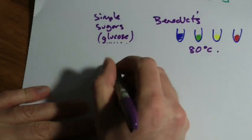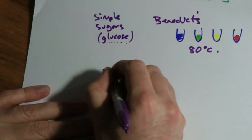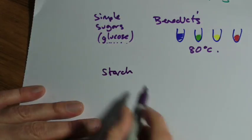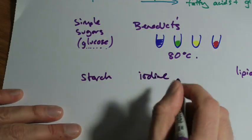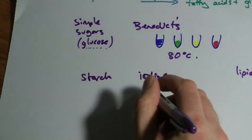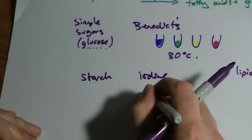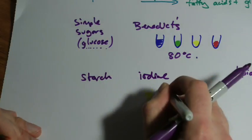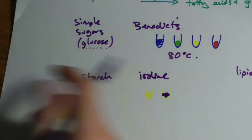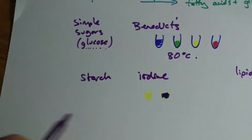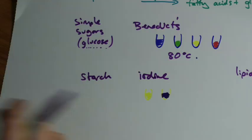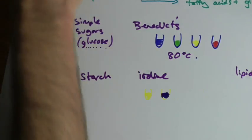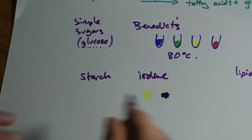Now the only other one you can come across is there's a specific test for starch, which is a type of complex sugar. And that's to use iodine. This one starts off in a kind of yellowy-orange color and if there is starch present, it turns a bluey or black color. That's the specific one for starch and iodine. So you'd need to know what all these three things turn into, and the three food tests.